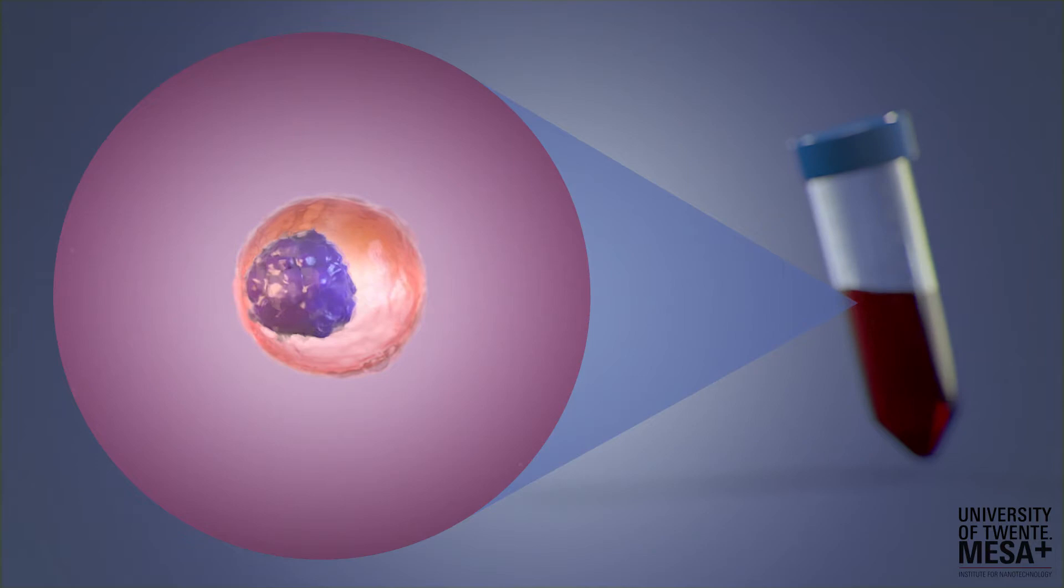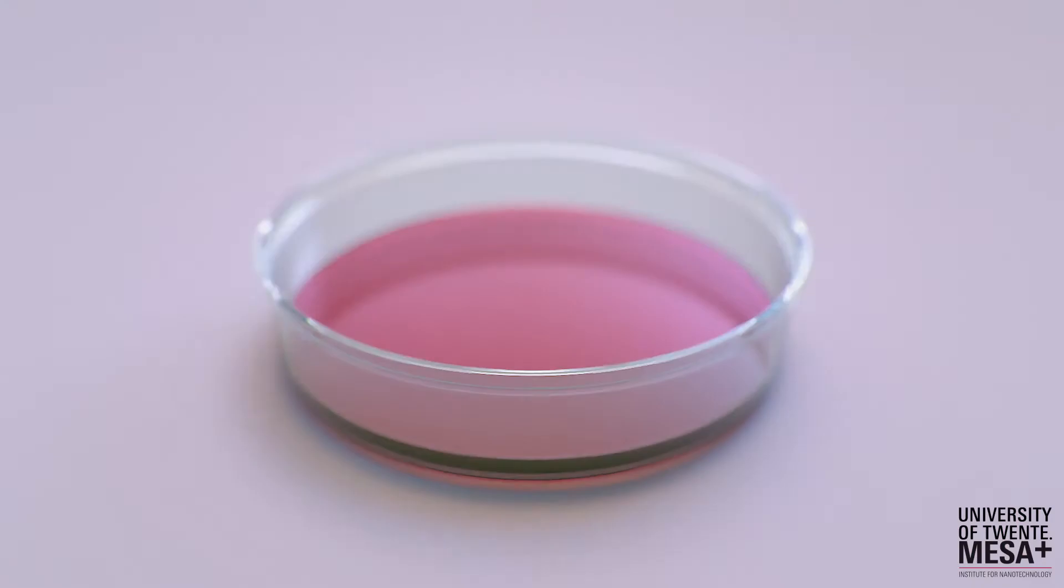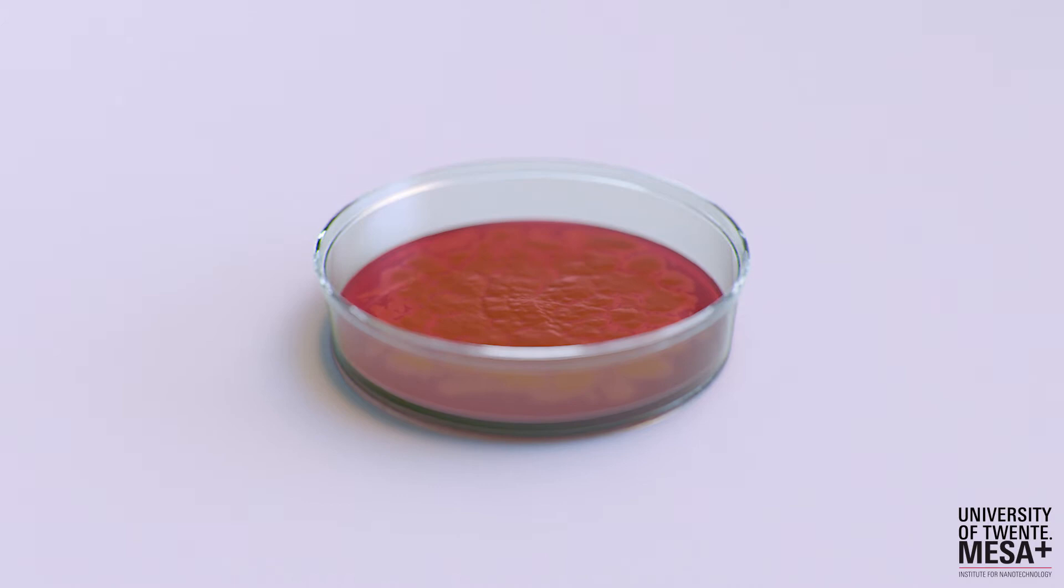From here, different organ-specific cells can be made such as brain, gut and heart cells. However, since we want these cultured cells to behave as if they were in a real organ, we need to give them a different environment than the standard flat, rigid cell culture materials.